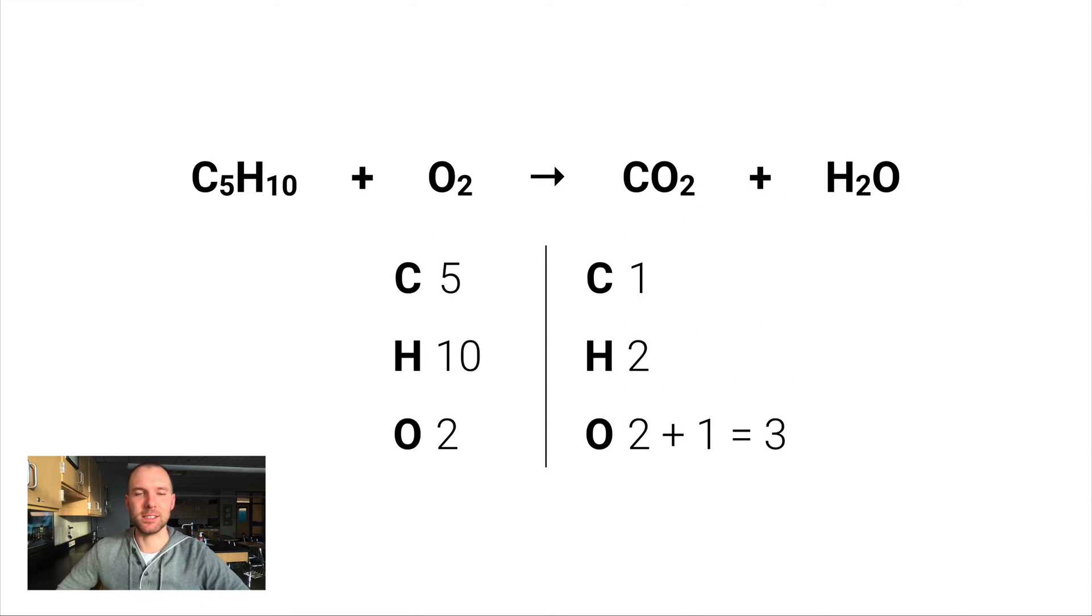But when you drop the line and you list out all the elements, what you'll see is that we've got oxygen presenting in a difficult situation for us. One thing I want to point out is if there's ever an element that exists in multiple products or multiple reactants—in this case we've got oxygen in both products—when you list out your inventory of the elements, my suggestion is to write it out like this. Here we've got two oxygens in the carbon dioxide, we've only got one oxygen in the water.